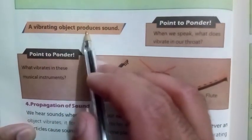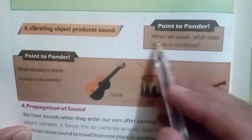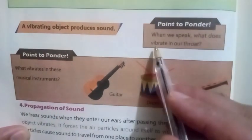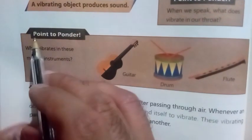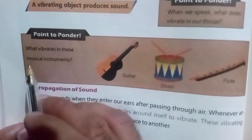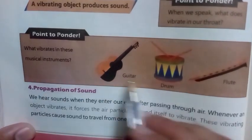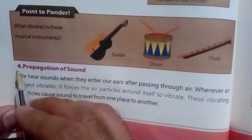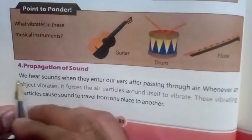A vibrating object produces sound. Point to ponder: When we speak, what vibrates in our throat? Point to ponder: What vibrates in these musical instruments — guitar, drum, flute? Number four: Propagation of sound.